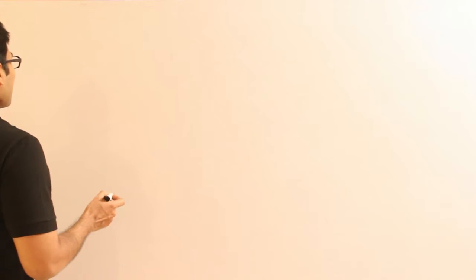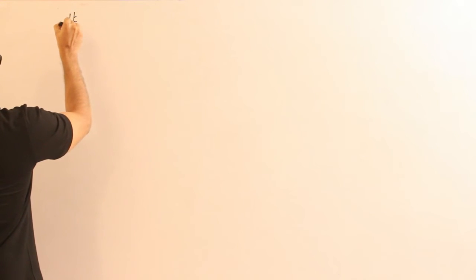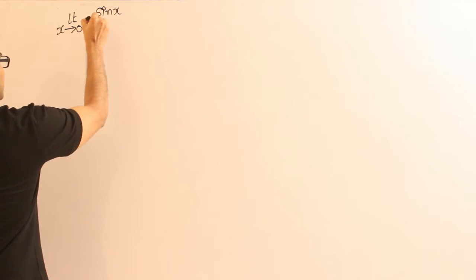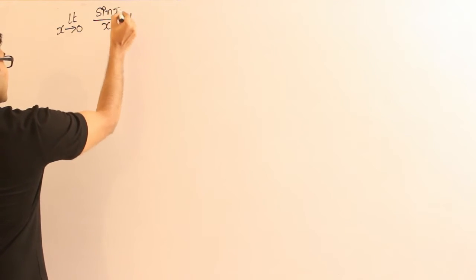But let me not take any chances — I will just prove it. In order to prove this, you are supposed to know a few basics from trigonometry, especially the sin, tan, and cos terms, and how to find the area of a triangle and the area of a sector. What I want to prove is: limit x tends to 0, sin x by x equals 1, where x is in radians.